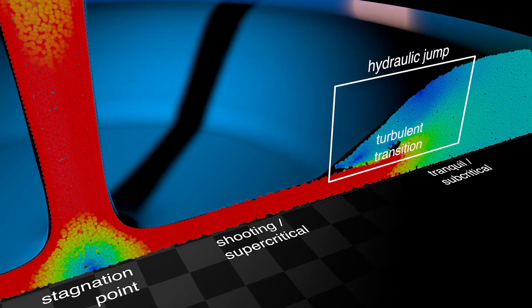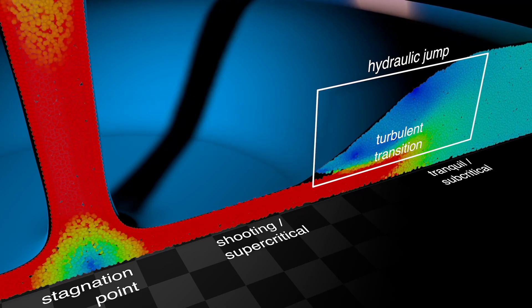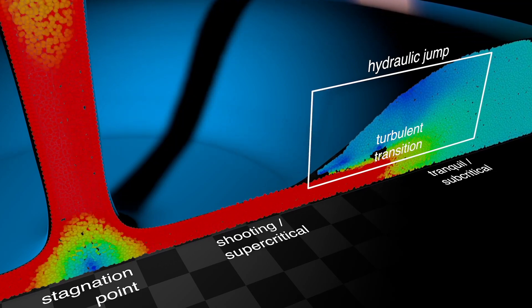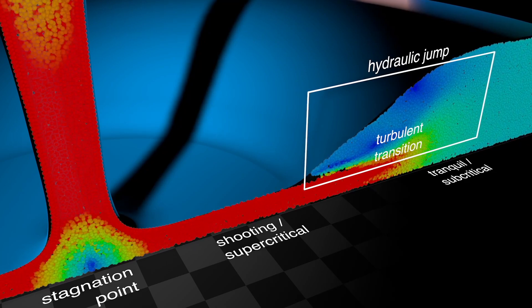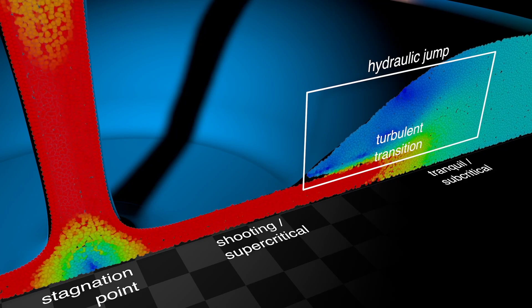The boundary between the very fast flowing and the slow flowing water is called the alternating jump or hydraulic jump. At this point, turbulence suddenly creates a thicker layer of water, similar to a water roll in a river.